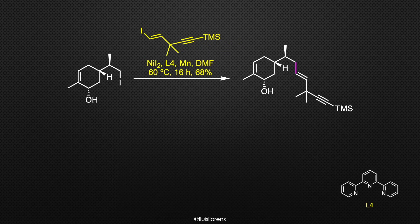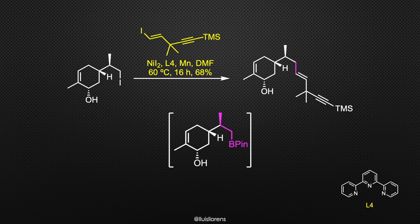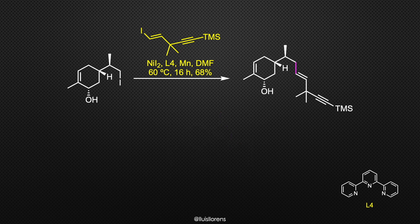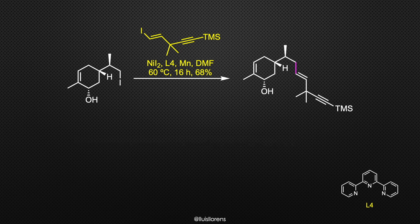In the next step, a Suzuki coupling between the alkyl iodide and the initially obtained pinacolboronate failed or produced the coupled product in low yields. After further investigation, the authors found a nickel-catalyzed reductive coupling protocol that delivered the desired product without further protection of the hydroxyl group in 68% yield. In this straightforward method, the alkyl iodide is coupled in the presence of nickel iodide, manganese, and a tridentate ligand in DMF.